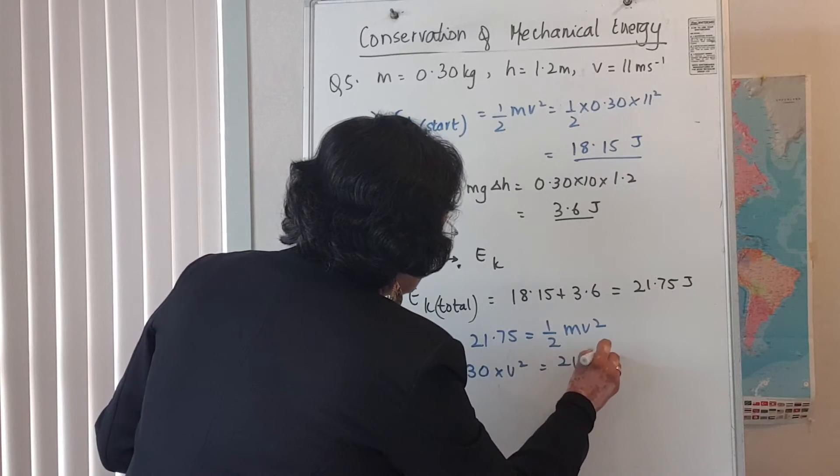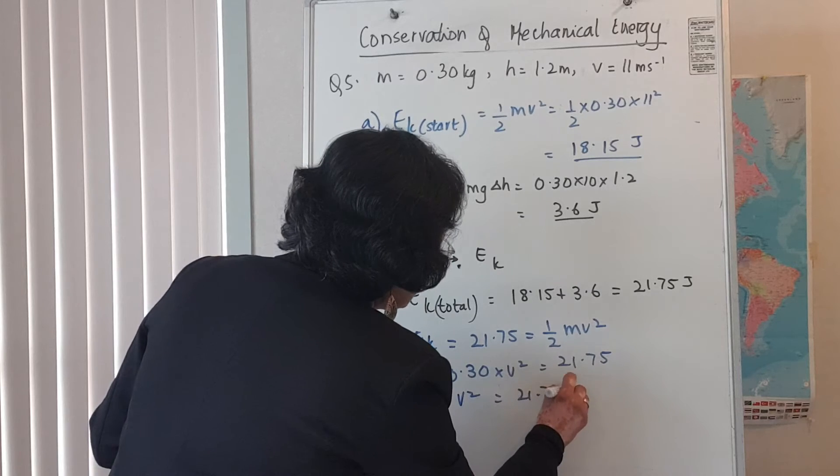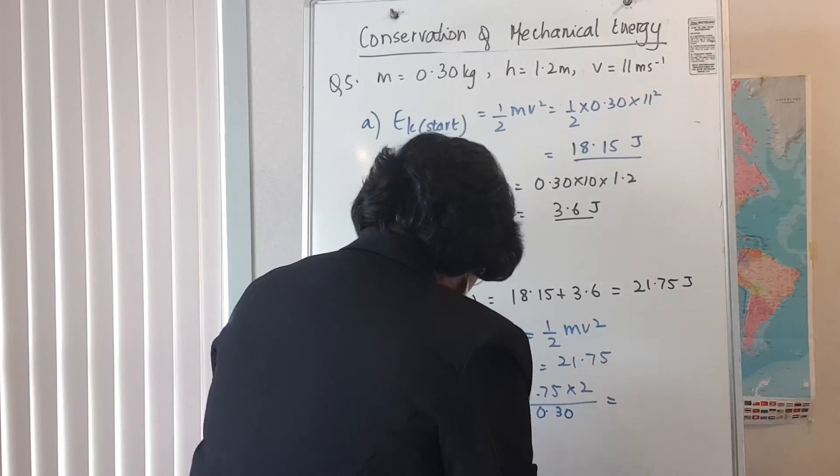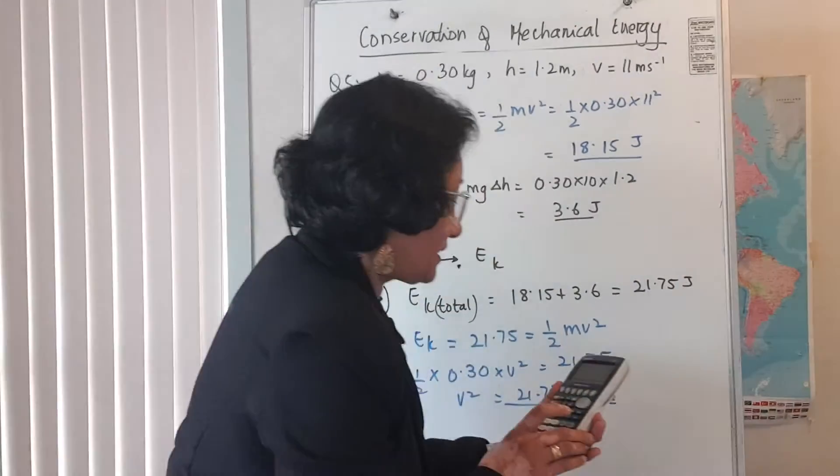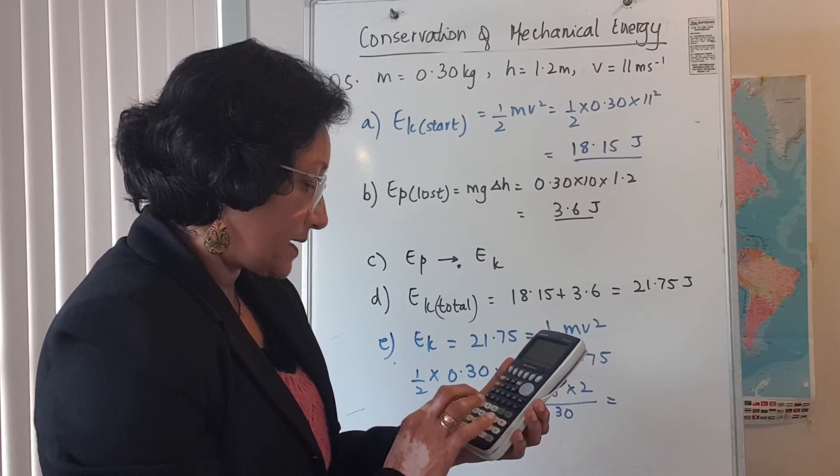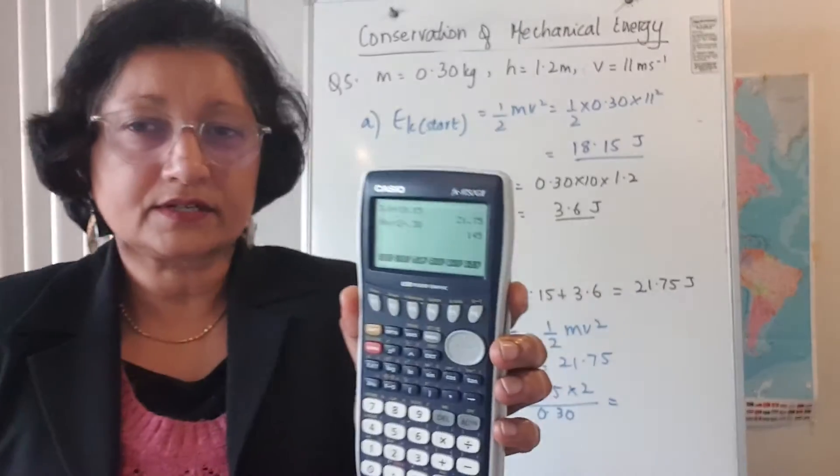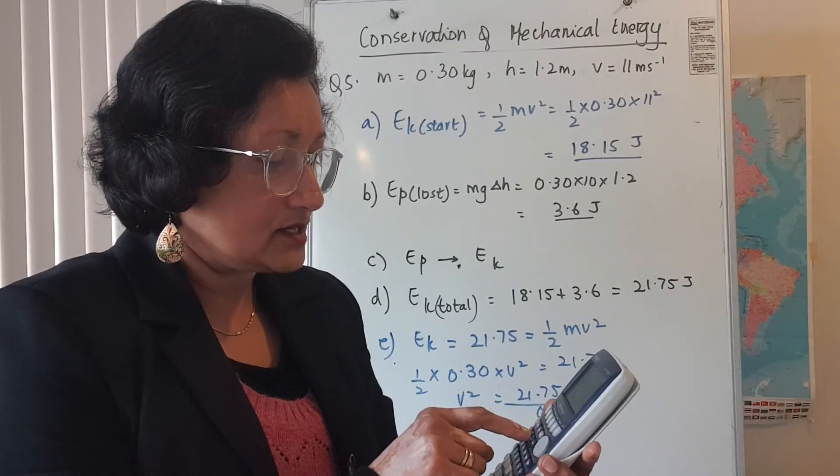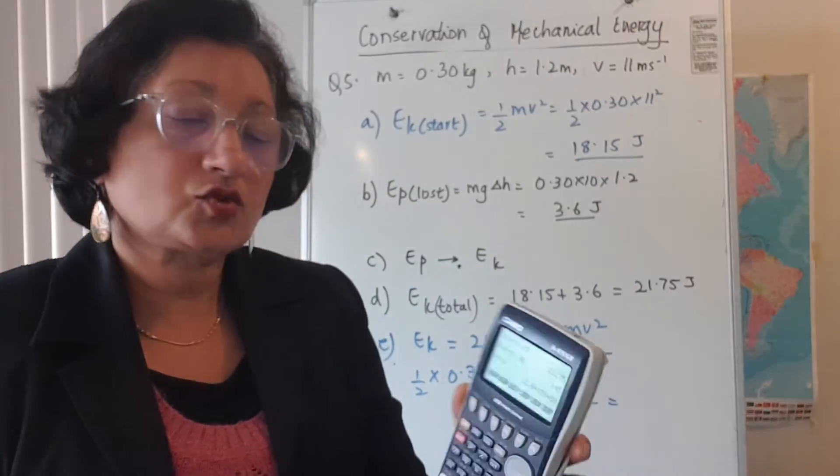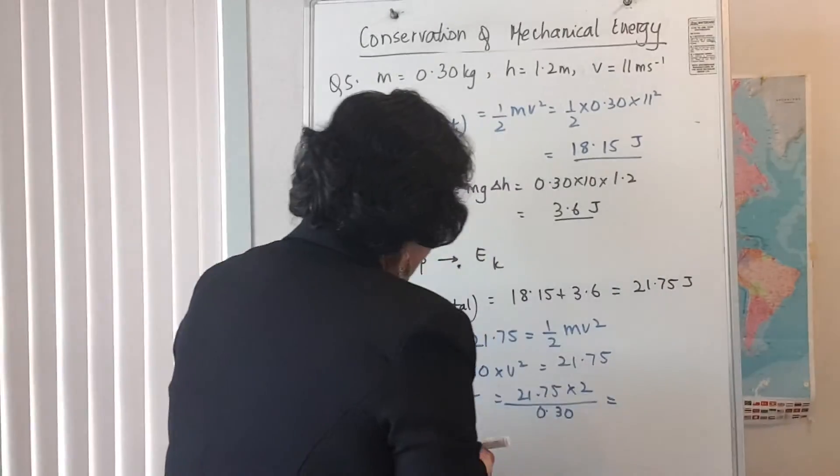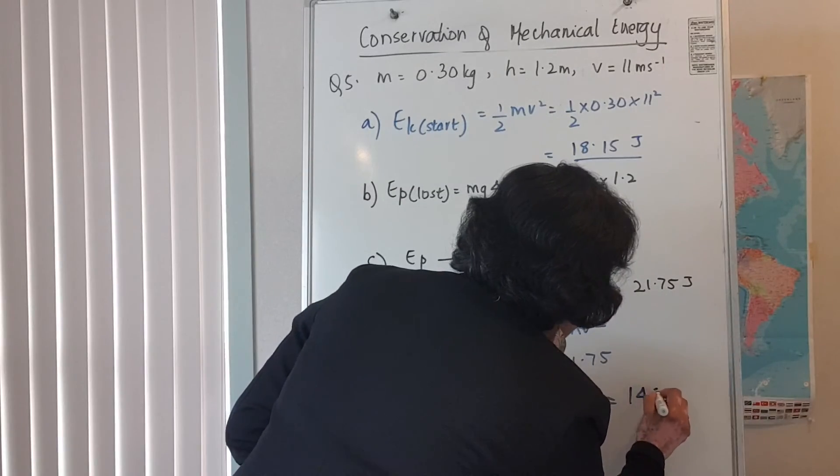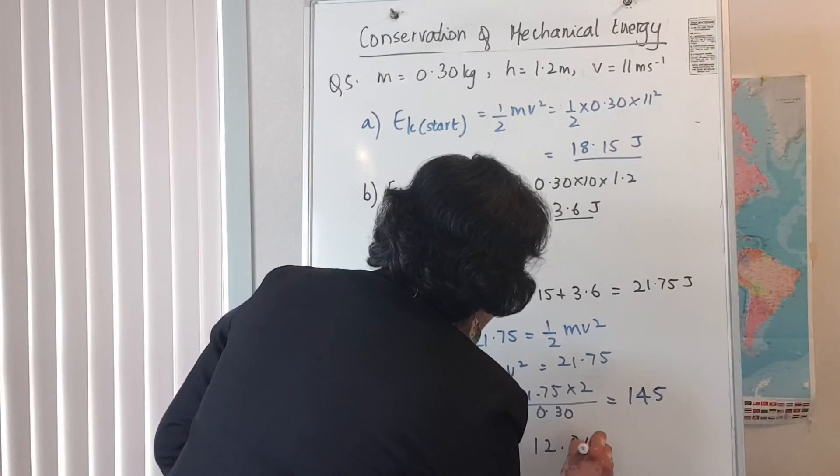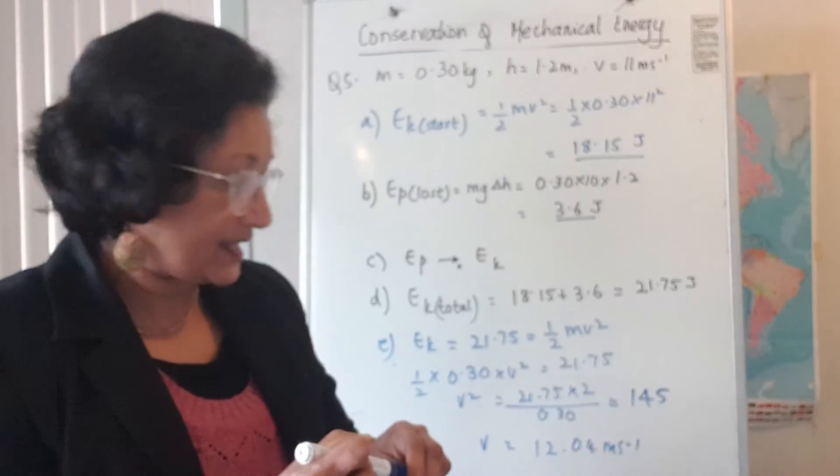21.75 times 2 divided by 0.30 and I get 145, but that's the answer to v squared so I've got to square root that, and I get 12.04, so that's the speed. So this is 145 and so v is about 12.04 meters per second.